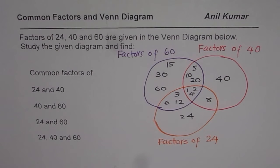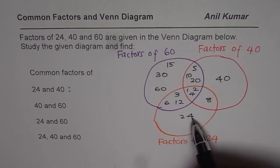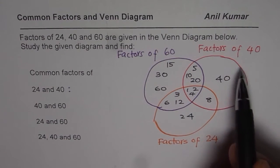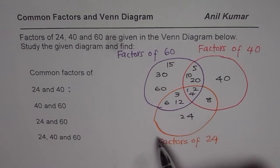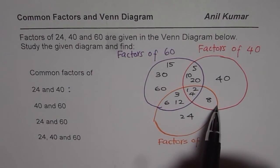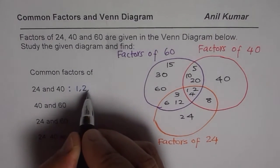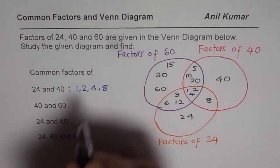Let us begin by writing common factors of 24 and 40 first. That means you are looking into the red and orange circles. Common factors are these numbers which are in between these two: 1, 2, 4, and 8.